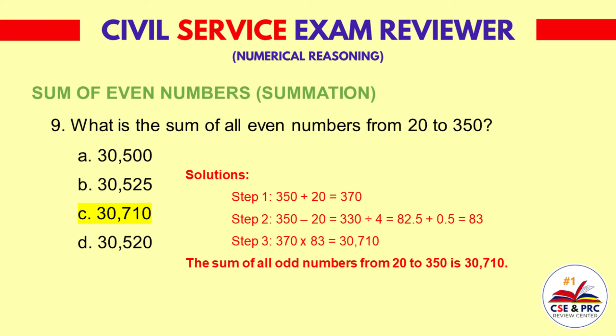Solutions — Step 1: 350 plus 20 is equal to 370. Step 2: 350 minus 20 is equal to 330, divided by 4 is equal to 82.5, plus 0.5 is equal to 83. Step 3: 370 times 83 is equal to 30,710. The sum of all even numbers from 20 to 350 is 30,710.